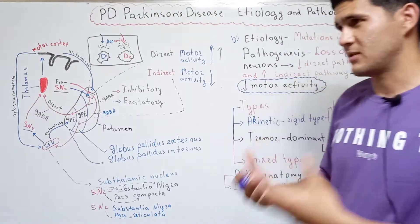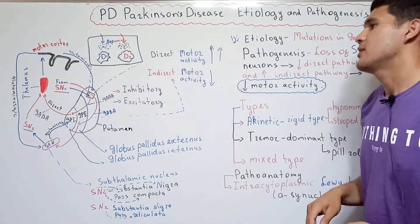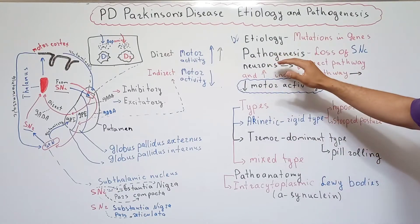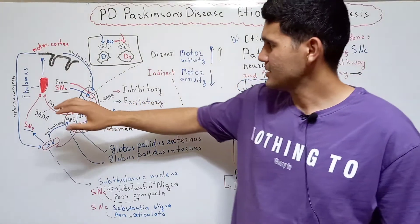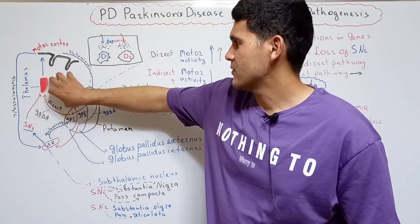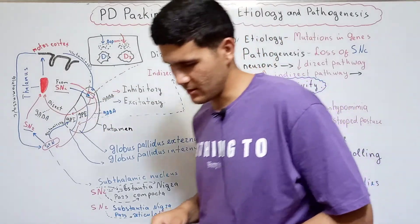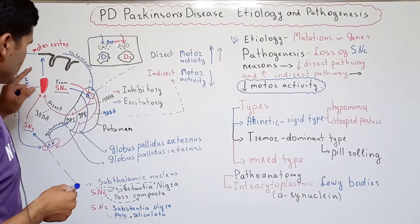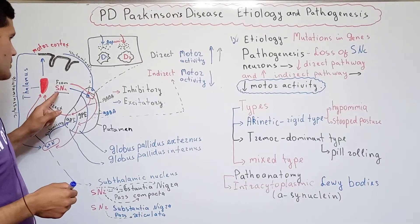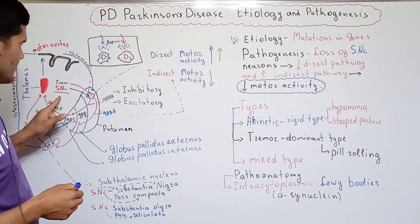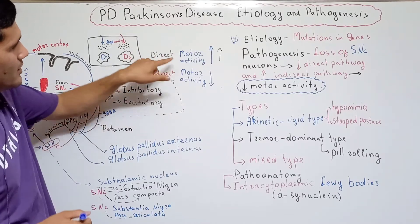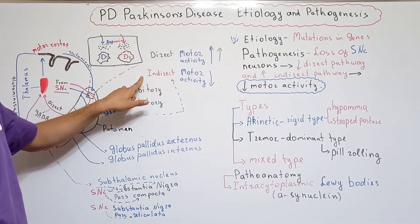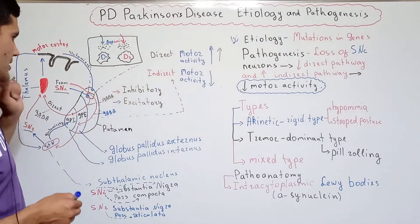It can cause the death of some neurons located there. The pathogenesis can be caused by the loss of function of the Substantia Nigra Pars Compacta. When the Substantia Nigra Pars Compacta loses its function, it can cause decreasing of the direct pathway and increasing of the function of the indirect pathway.